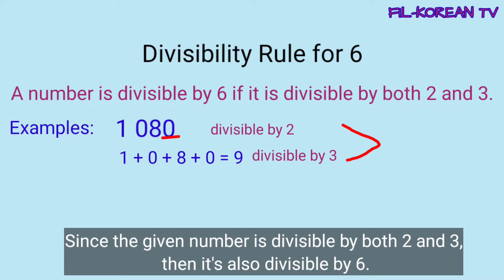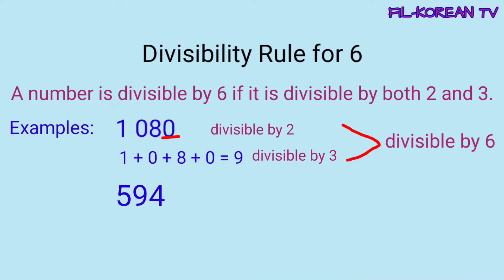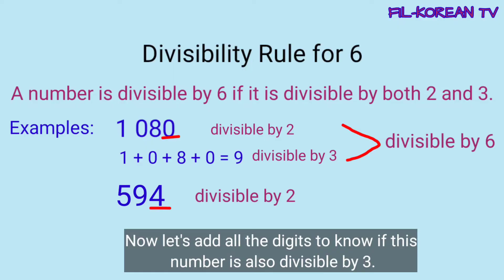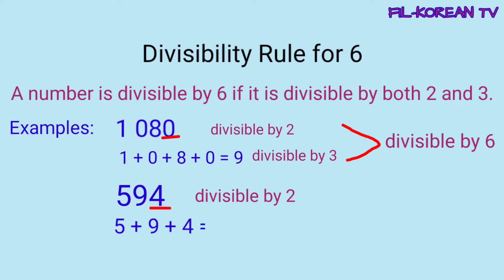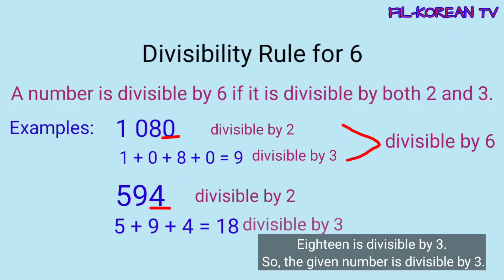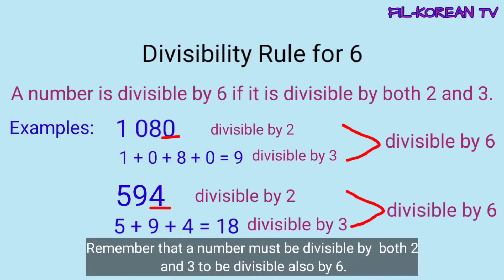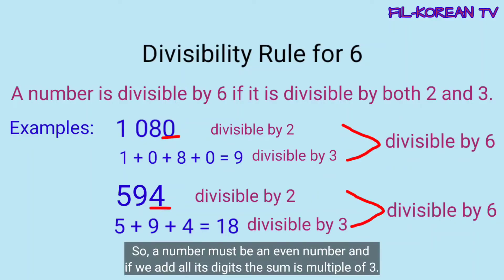Another example, 594. Yung last digit ay 4. So, even number ito, kaya naman ito ay divisible by 2. Ngayon, i-plus natin yung lahat ng digits para malaman natin kung ito ay divisible din ng 3. 5 plus 9 plus 4 equals 18. Ang 18 ay divisible by 3. So, ibig sabihin, yung given number ay divisible by 3. At dahil yung given number ay divisible pareho ng 2 at 3, then ito ay divisible din ng 6. Tandaan, na dapat yung given number ay divisible pareho ng 2 at 3 para maging divisible ng 6. So, dapat ang number ay even number at kapag i-plus natin ang lahat ng digits, yung sum ay divisible by 3 or multiple ng 3.